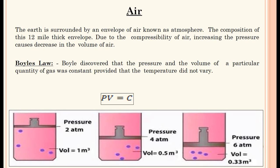Air — the earth is surrounded by a 12-mile-thick envelope of air known as the atmosphere. Due to the compressibility of air, increasing the pressure causes a decrease in the volume of the air — that is, PV = C, which is Boyle's law. Pressure measurement is also discussed.